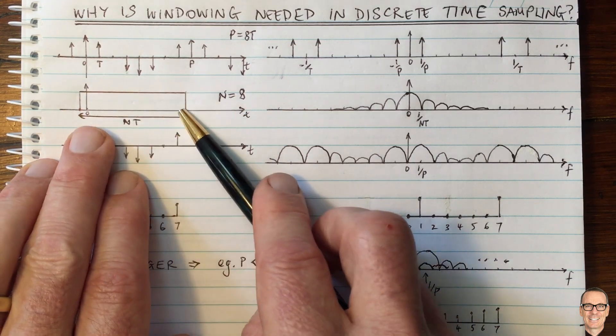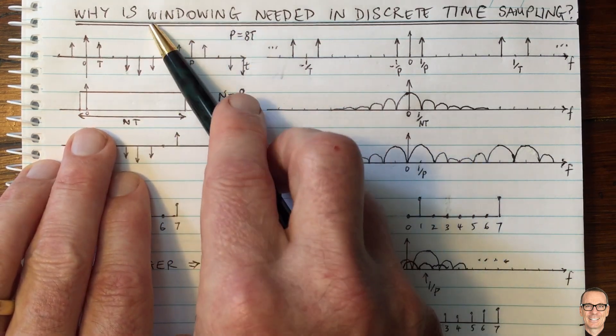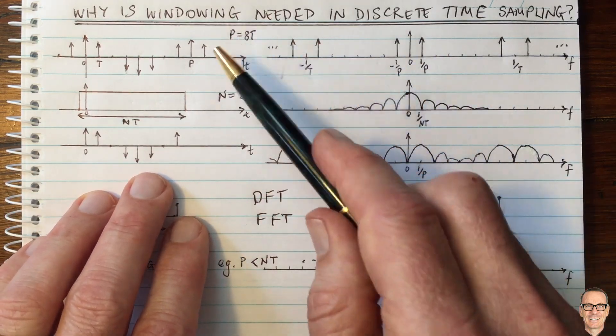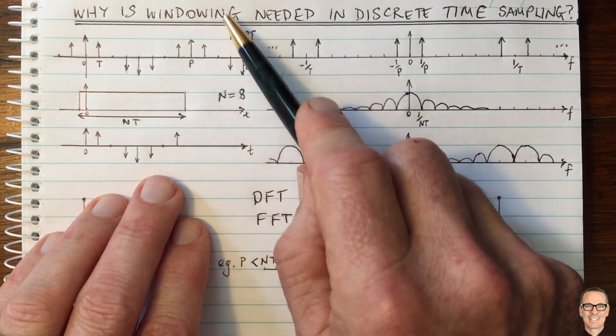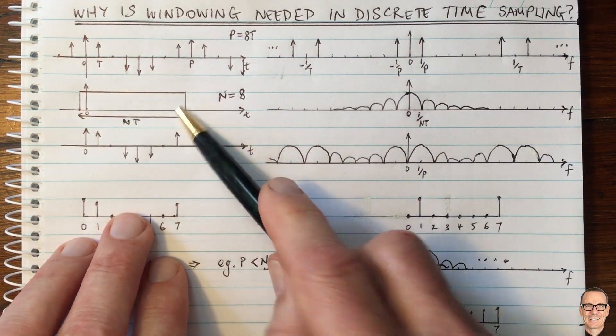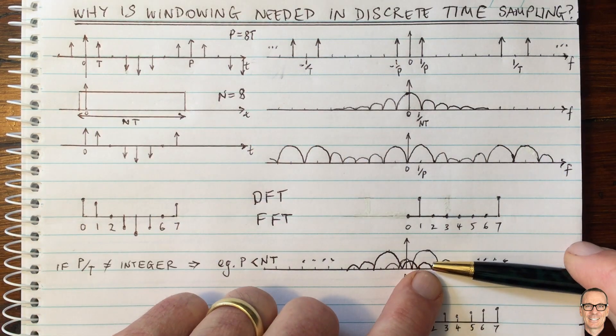If you want a video that explains different types of windowing and what windowing is, check out the show notes of the video and you'll find links to another video on what windowing is that explains different shapes of windows and how it can affect those side lobes.